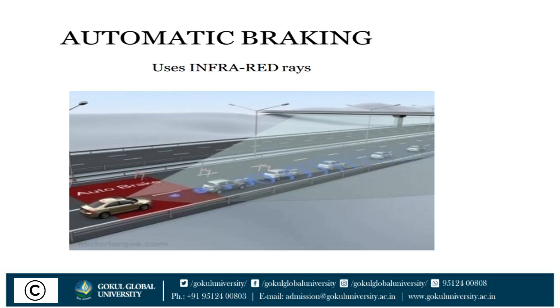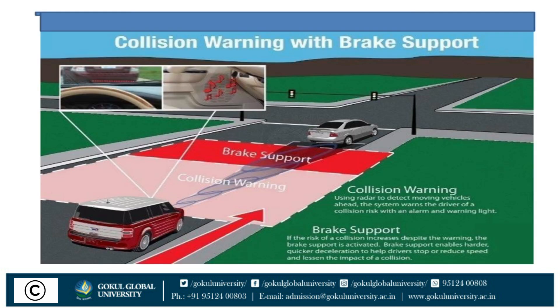Another safety feature is automatic braking, which uses infrared rays. The collision warning system uses radar to detect moving vehicles ahead. The system warns the driver of collision risk with an alarm and warning lights. If the risk of collision increases, the brake support is activated — braking harder and quicker for deceleration to help drivers stop or reduce speed and lessen the impact of a collision.